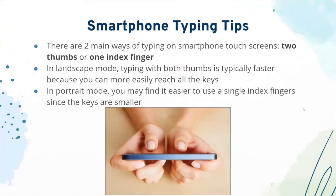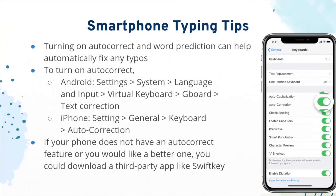Just a couple of tips for smartphone typing. There are two main ways of typing on a smartphone touchscreen: you can either use two thumbs or one index finger. In landscape mode, typing with both thumbs is typically faster because you can more easily reach all of the keys. In portrait mode, some find it easier to use a single index finger since the keys are smaller. You can also use autocorrect and word prediction, which you can turn on in your settings. If your phone doesn't have an autocorrect feature or you'd like a better one, you can download third-party apps like SwiftKey.